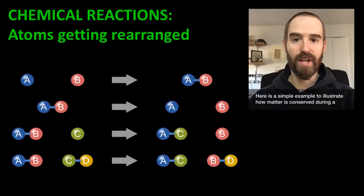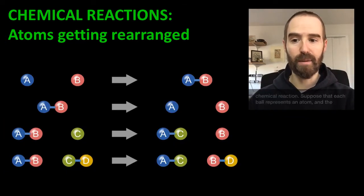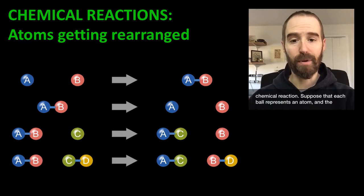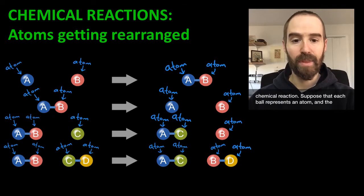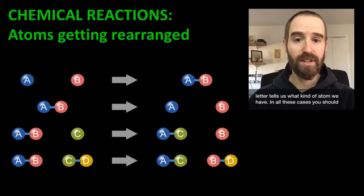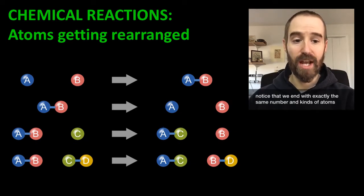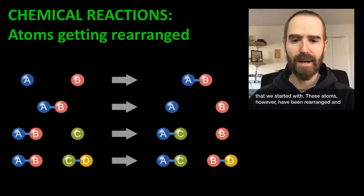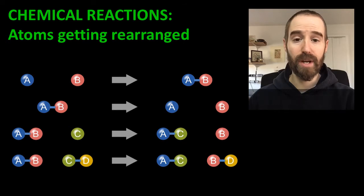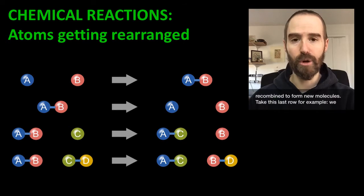Here we see a simple example to illustrate how matter is conserved during a chemical reaction. Suppose that each ball represents an atom, and the letter tells us what kind of atom we have. In all these cases, you should notice that we end with exactly the same number and kinds of atoms that we started with. These atoms, however, have been rearranged and recombined to form new molecules.